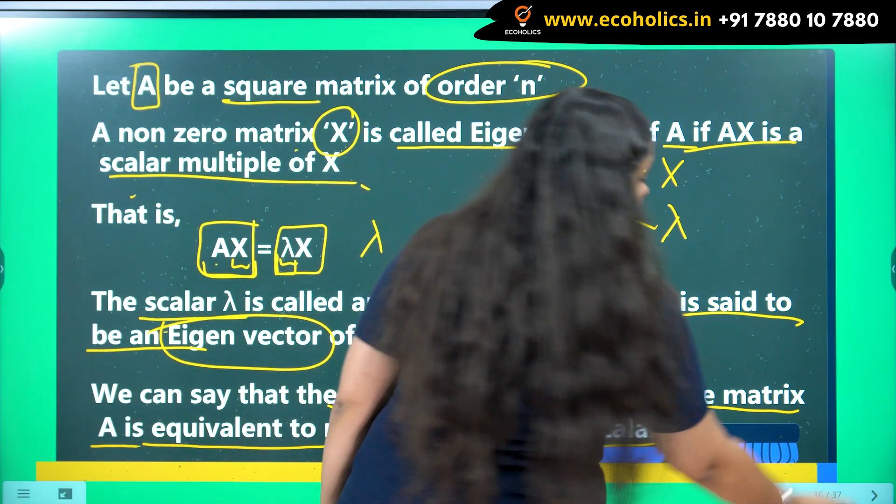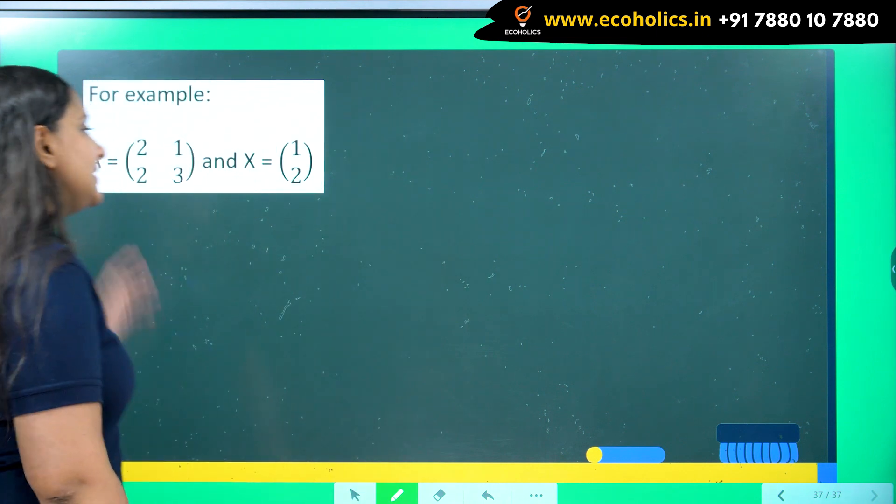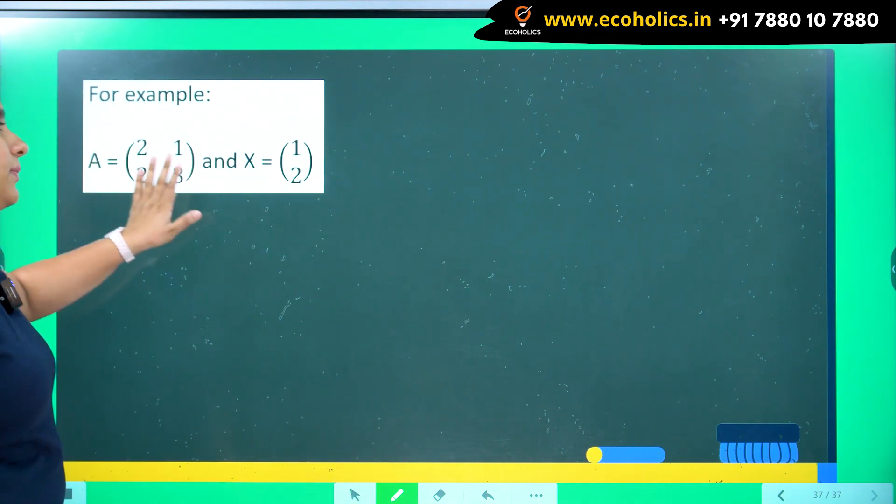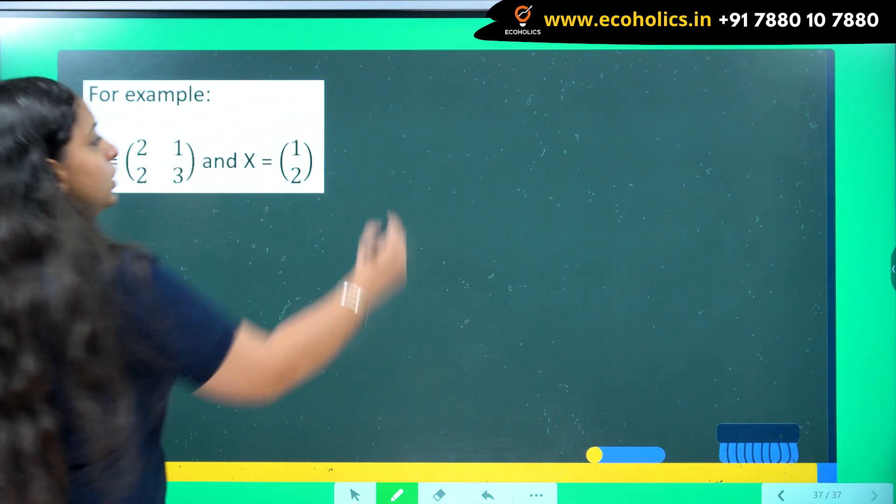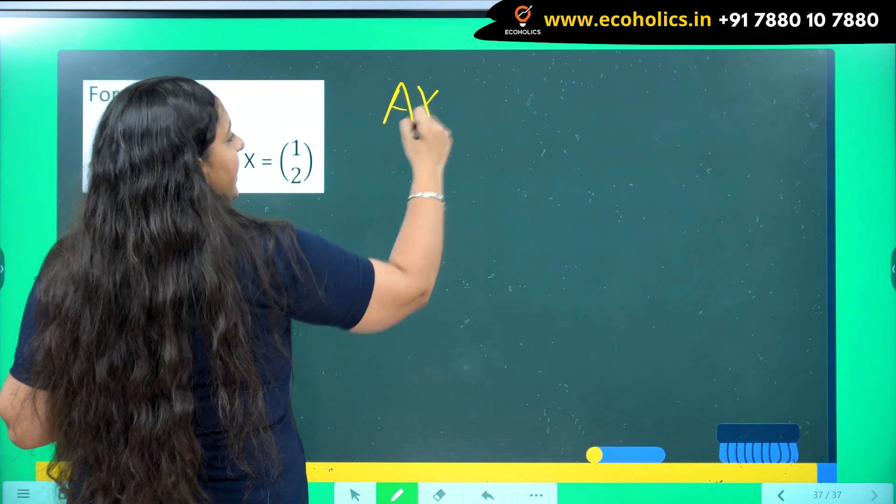So let's try to understand this approach with the help of one example. So we have this A matrix, we have this X matrix here. So if I try multiplying A into X.